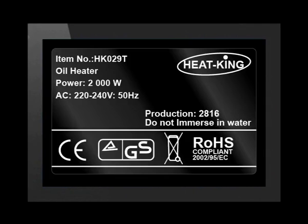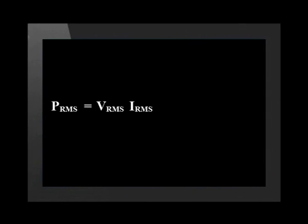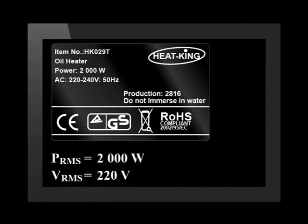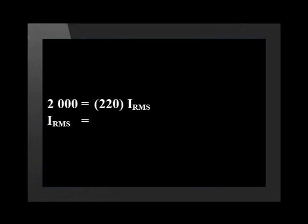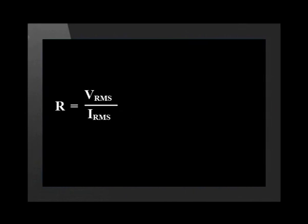Now that we've investigated the details of alternating voltages and currents, let's see if there is anything else worth calculating. When looking at the label on appliances, very often the voltage as well as the power consumption are shown. The equation to calculate the power consumption of an alternating current appliance is the RMS voltage multiplied by the RMS current. Solving for current in a worked example gives us 9.09 amps.